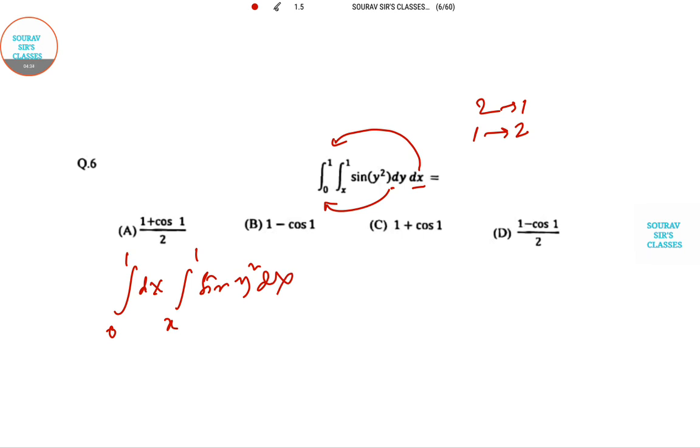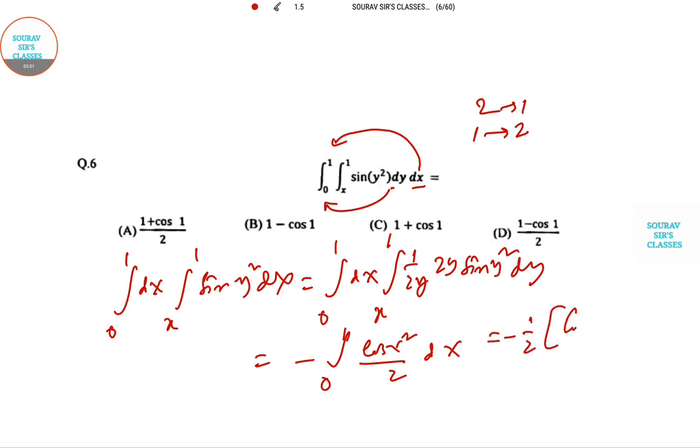One thing is clear that x is less than 1. So now this is 0 to dx, you don't need to integrate this part in the beginning. So x to 1 and I'm writing it as 1 by 2y, 2y sine y² dy. After derivative you will get this part: 0 to 1, cos of x² by 2 dx. After that you put the value, so cos 1 minus 1. So 1 minus cos 1 by 2. Option D is our answer.